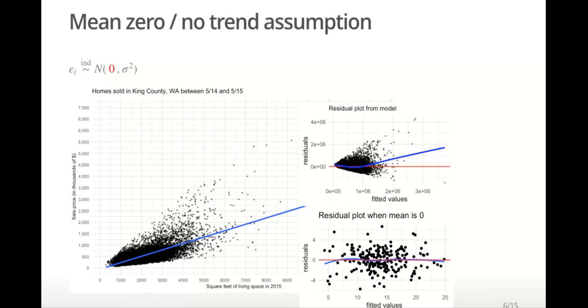We can look at plots of residuals versus fitted values to check this model assumption. The plot on the left once again shows the raw data and a simple linear model that uses square feet of living space to predict sales price. The plot in the upper right corner shows the residuals versus fitted values for this model. We see that, on average, the smallest and largest fitted values are greater than zero, meaning these values are being underestimated by the model. The residuals in the middle are on average below zero, which means they are being overestimated.